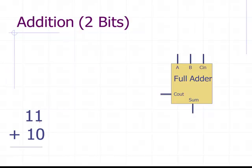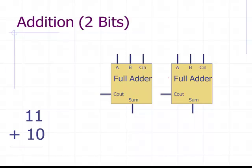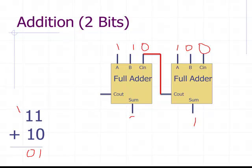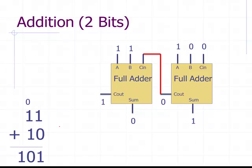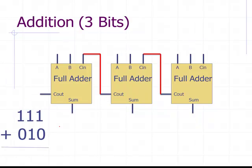For two-bit addition, like one-one plus one-zero, we need more than one full adder — we connect two together. One and zero with zero carry-in: one plus zero equals one, so sum is one with zero carry. Then one plus one equals zero carry one, so sum bit is zero and carry-out is one.